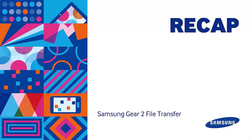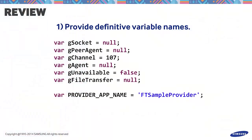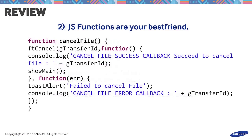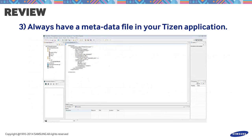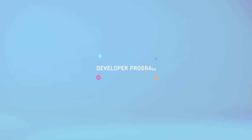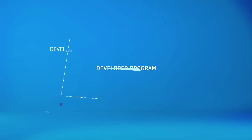To sum everything up, let's have a recap. First, provide definitive variable names. JS functions are your best friend, as seen in the application. Always have a metadata file in your Tizen application. We hope this tutorial helped. For inquiries, please post your questions on the official forum at developer.samsung.com. Stay tuned for part 4 of this series. Thanks for watching — we'll see you in the next episode. Bye!